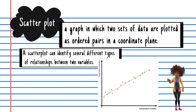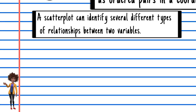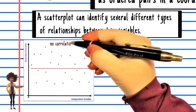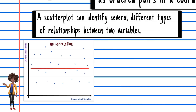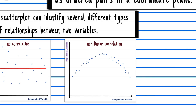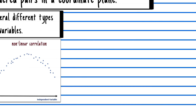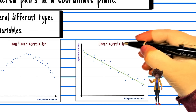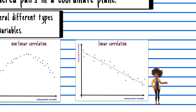A scatterplot indicates the strength and direction of the correlation between the two numerical variables, and can identify several different types of relationships. A relationship has no correlation when the points on a scatterplot do not show any pattern. A relationship is nonlinear when the points follow a pattern but not a straight line. A relationship is linear when the points follow a somewhat straight line pattern — this is the relationship that we will examine.